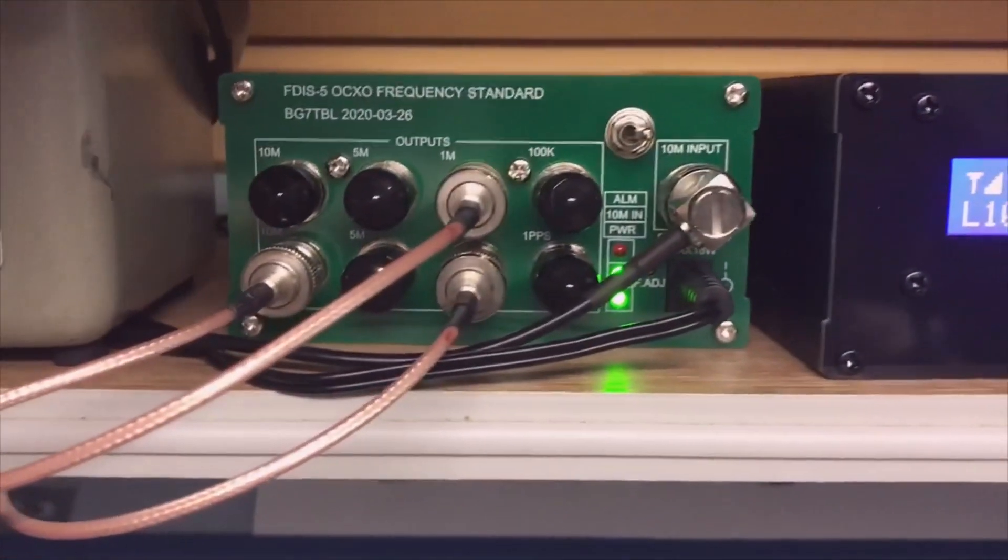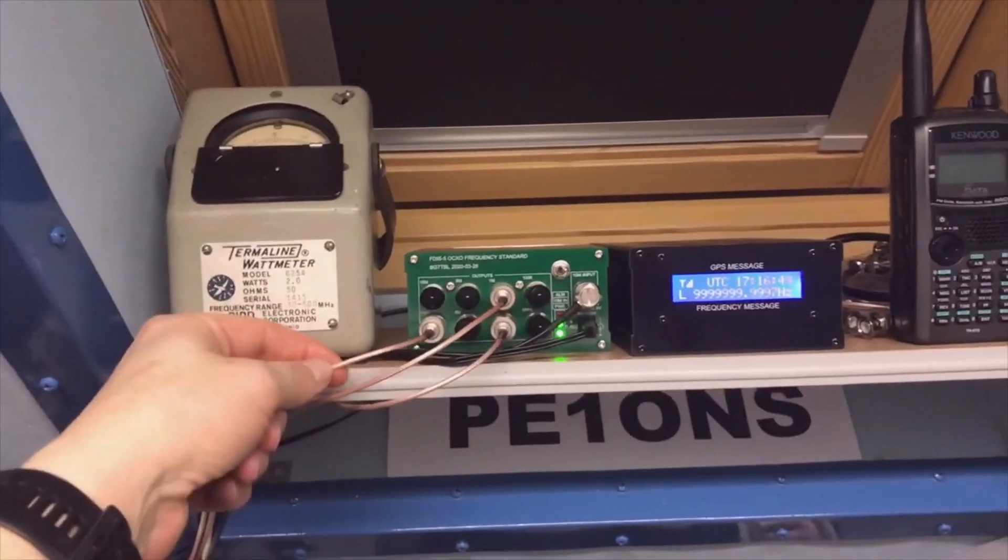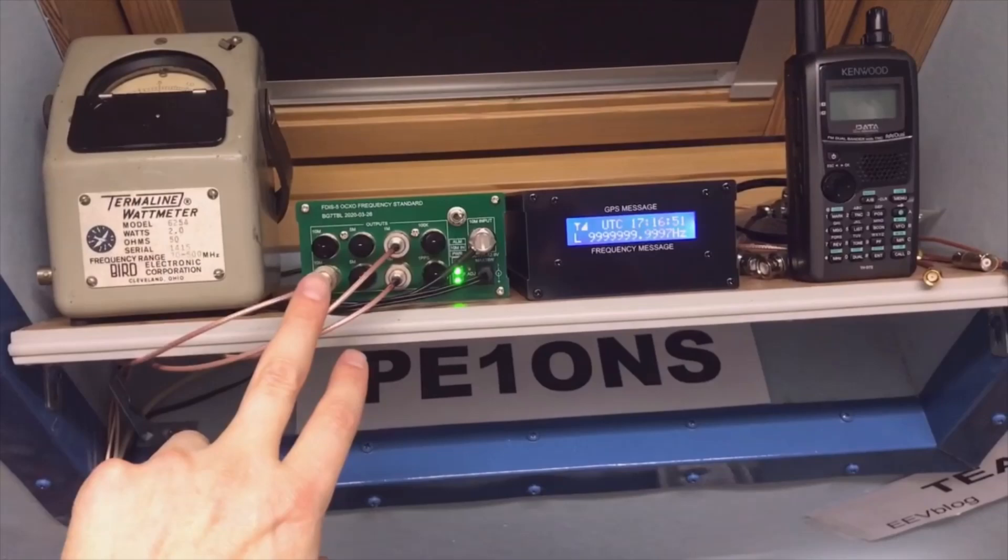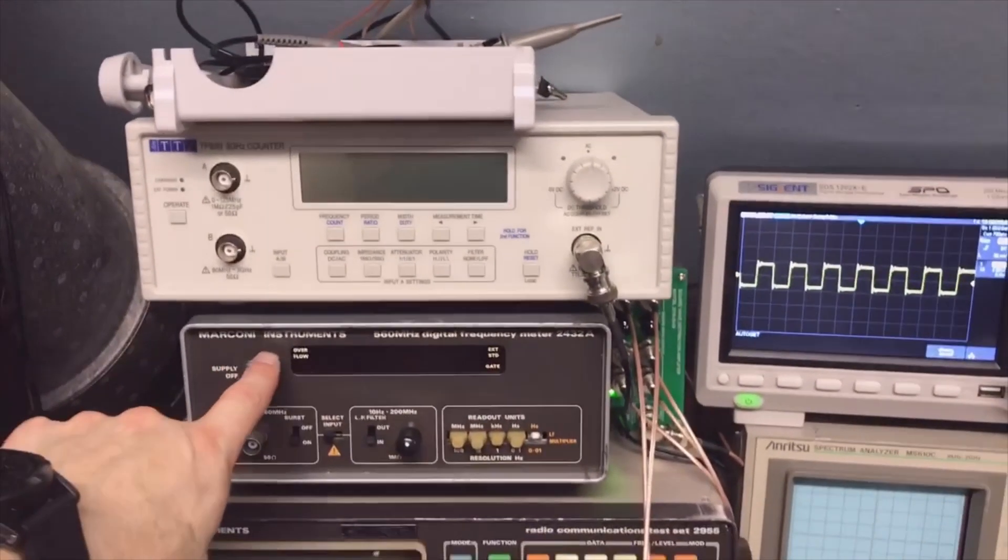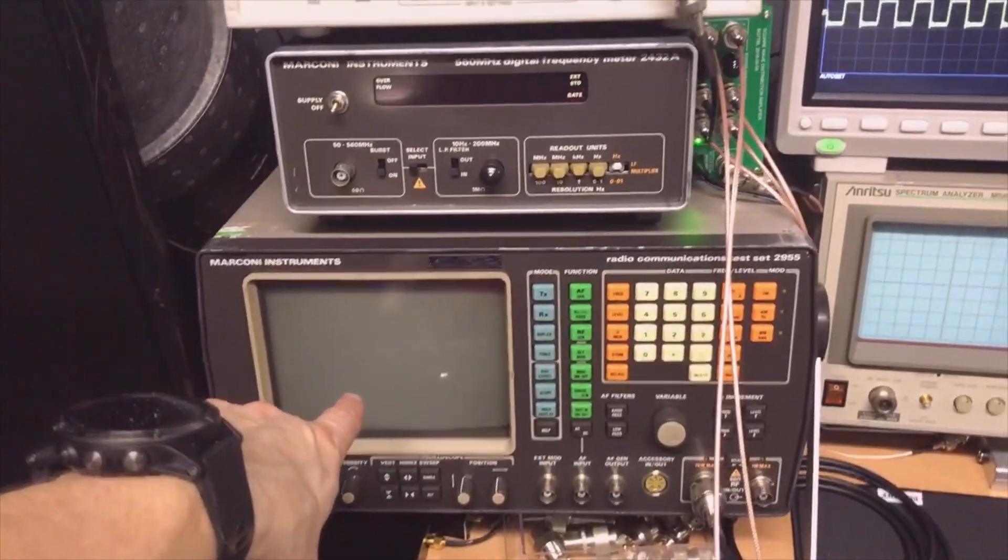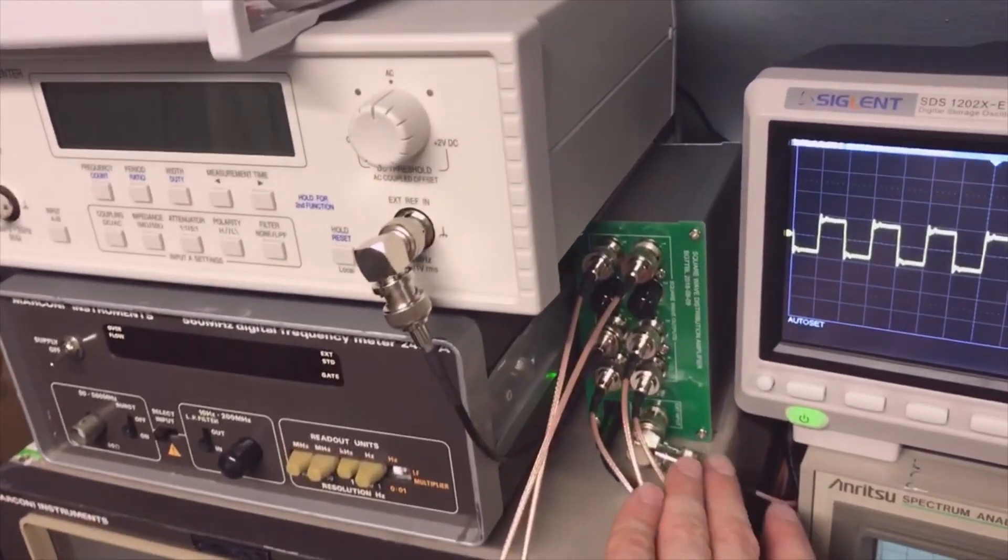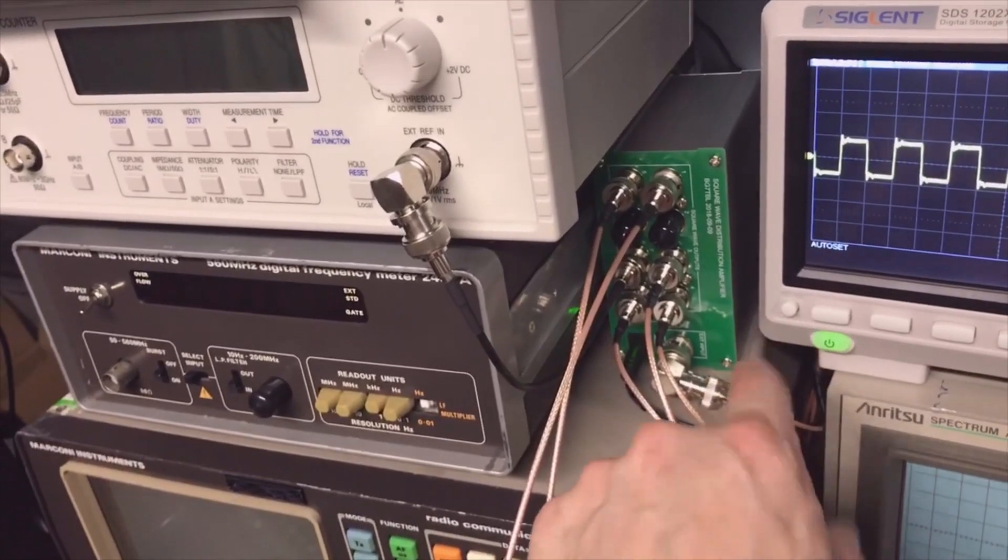Right there we have it in production. The GPSDO goes into the FD5 - one exit for 10, two exits for 1 megahertz. The 1 megahertz goes to the first Marconi and to second Marconi.